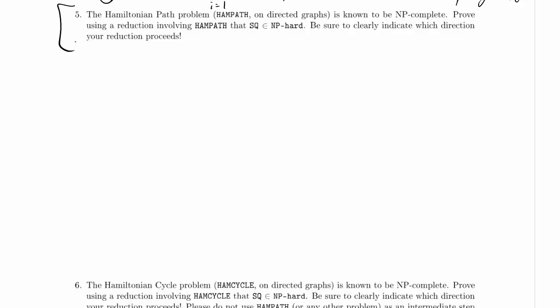First of all, remember NP-hard is the set of all decision problems such that if we could solve that decision problem in polynomial time, then we could solve all decision problems in NP in polynomial time. This is the 'everything is reducible to this problem in NP in polynomial time' part of NP-complete. We've already shown that SQ is in NP, so if we additionally show that it's NP-hard, then we've actually shown that it's NP-complete.